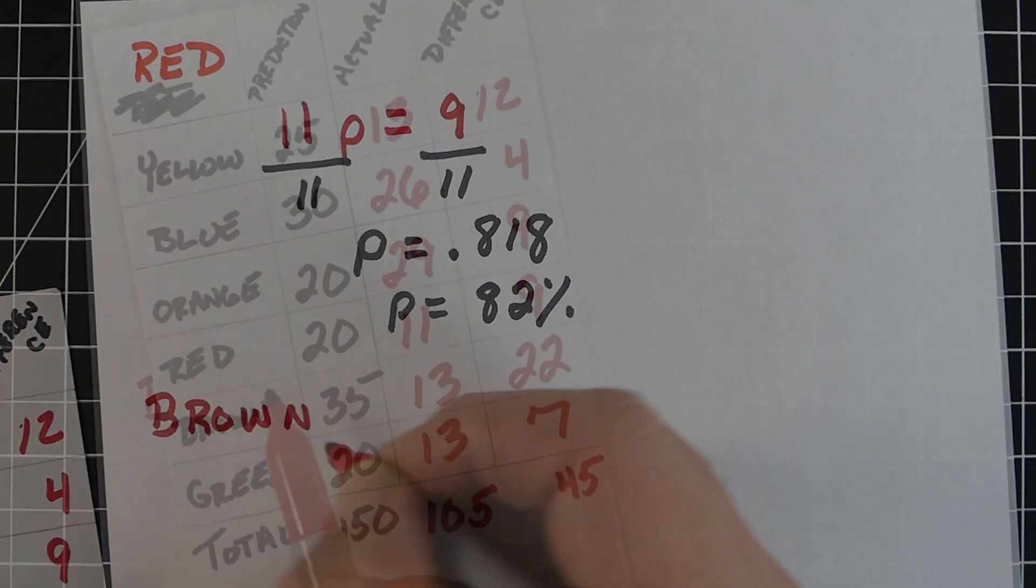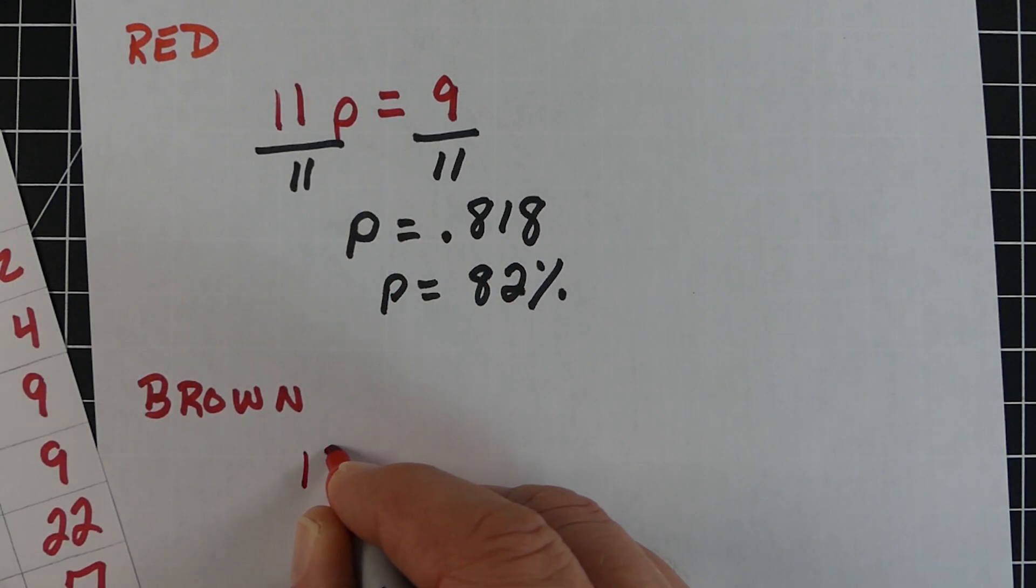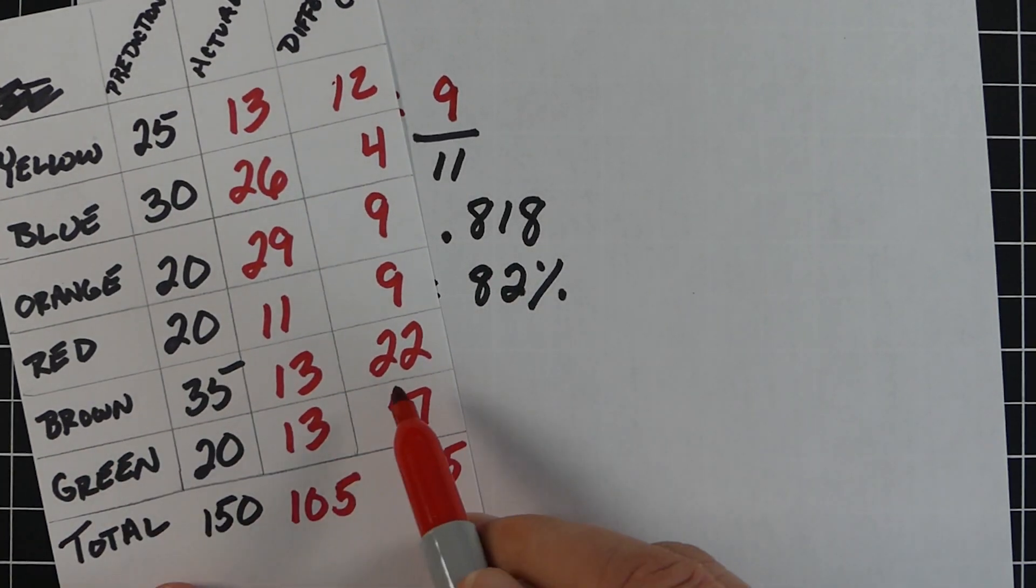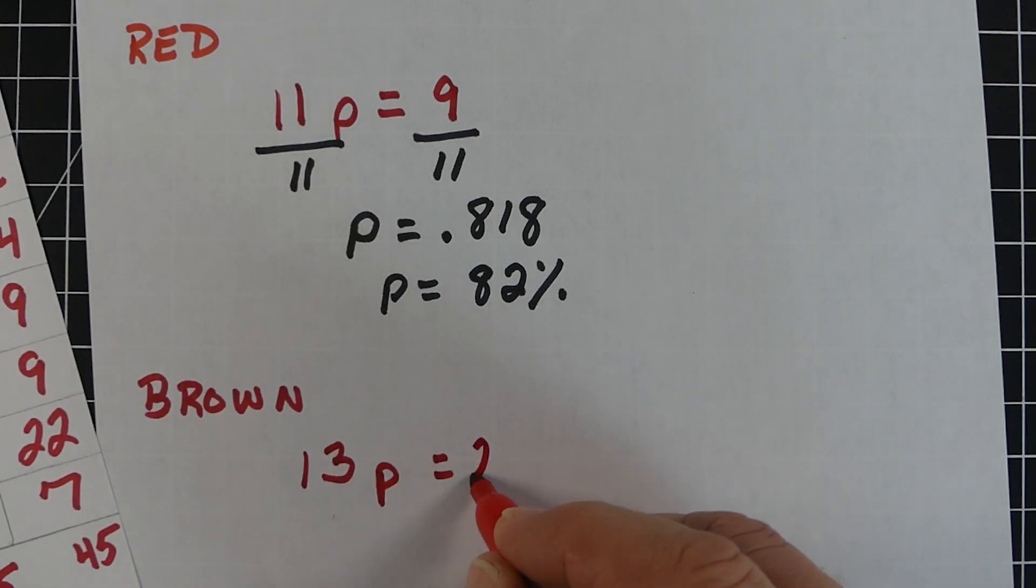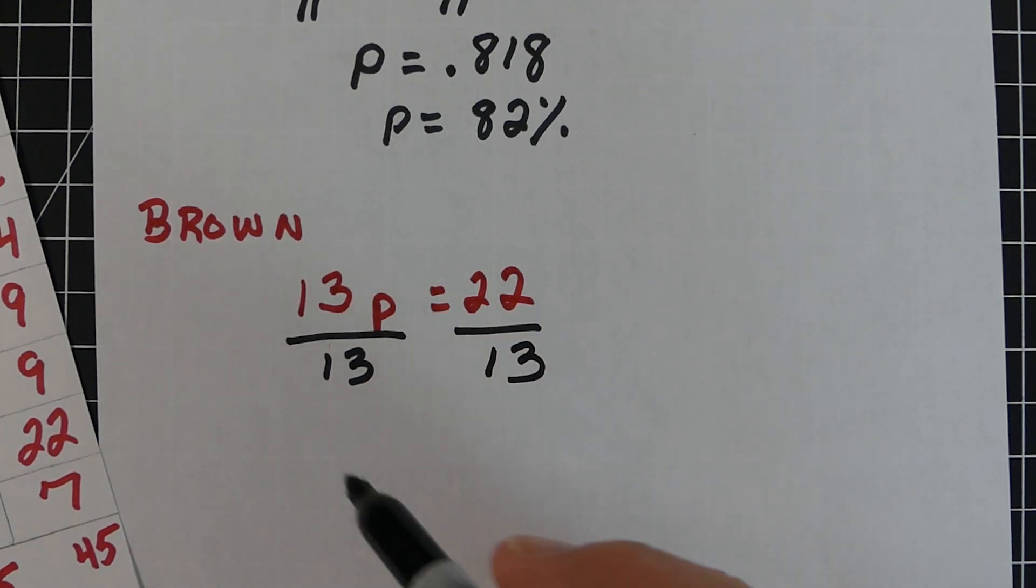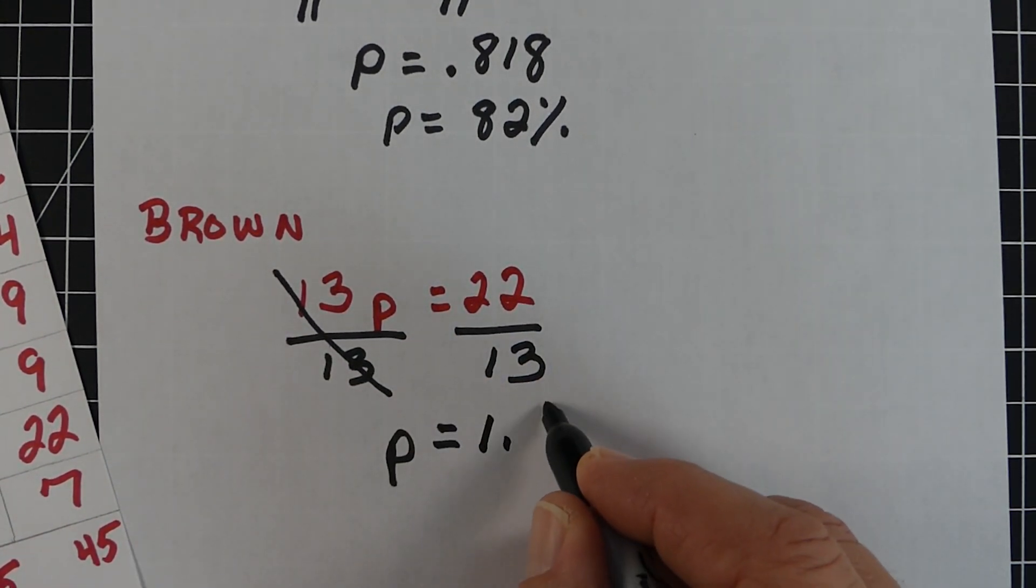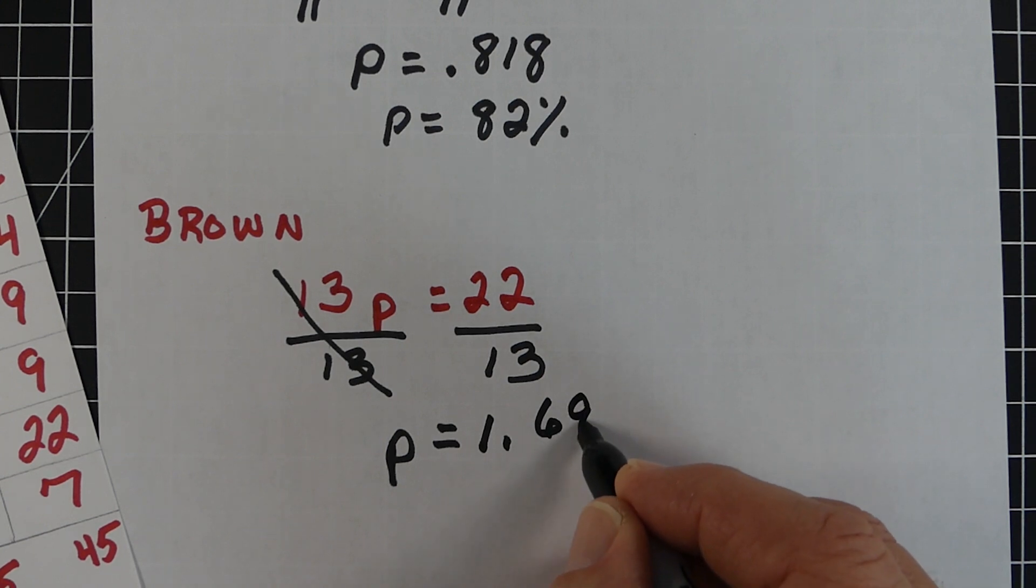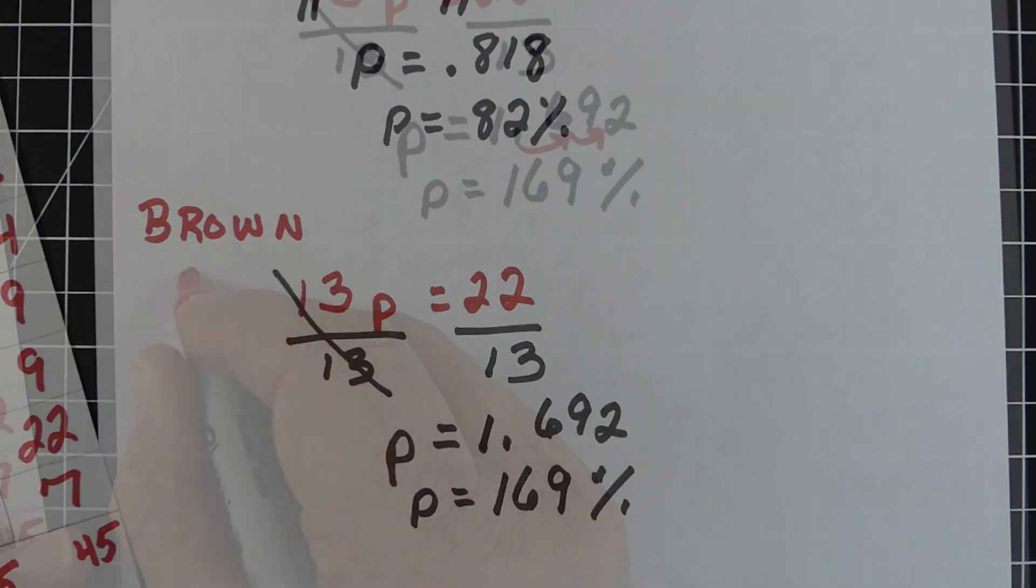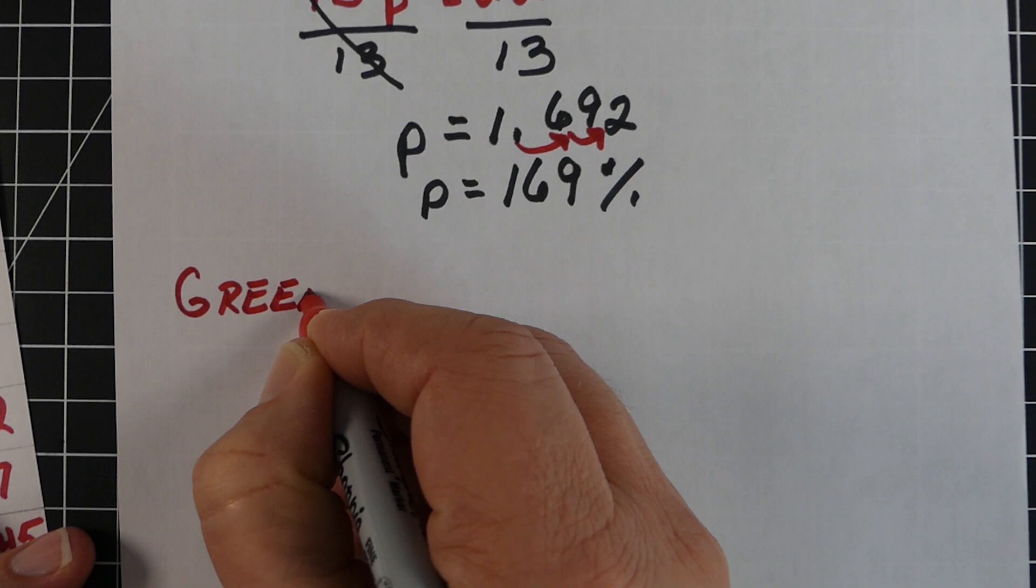Next is brown. This one was probably the most brutal. I thought 35, it was actually 13, so a big amount of error - 22. We have 13P equals 22. Divide both sides by 13, giving P on the left. Then 22 divided by 13 is 1.692. Multiply by 100 or move the decimal twice to the right, we end up with 169% error. Pretty brutal on the brown pick.